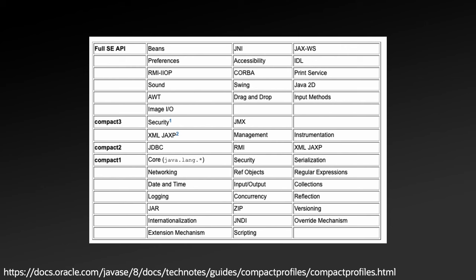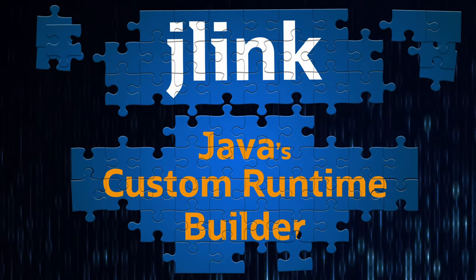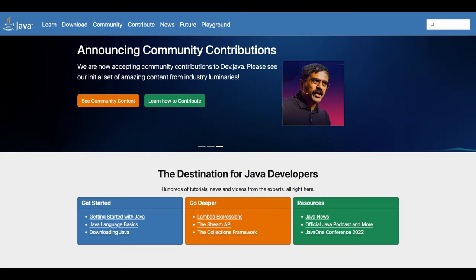Developers needed an ad hoc way of creating a custom Java runtime that fit the specific needs of their applications, a functionality provided by JLink, Java's custom runtime builder, the subject of this episode of Stackwalker. If you're interested in learning more about JLink, other Java topics, or how to find a local Java users group, be sure to check out dev.java, link in the description.